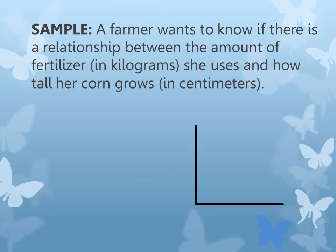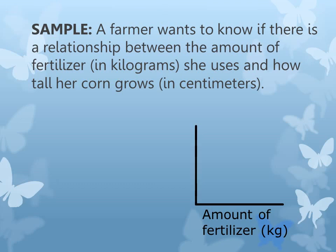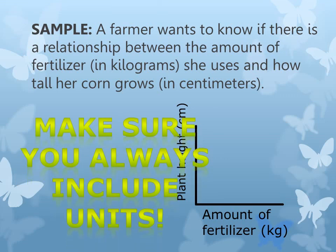Here's a sample problem: a farmer wants to know if there is a relationship between the amount of fertilizer in kilograms she uses and how tall her corn grows in centimeters. The thing she is changing is the amount of fertilizer, so that goes on the bottom with the units in parentheses. Then how tall her corn grows goes along the side, again with units in parentheses. Always make sure you include units.